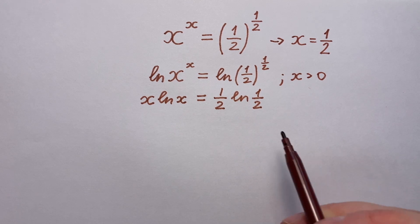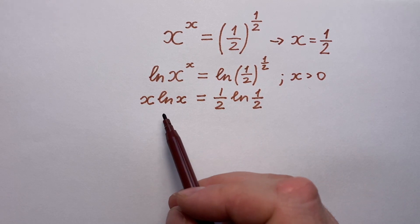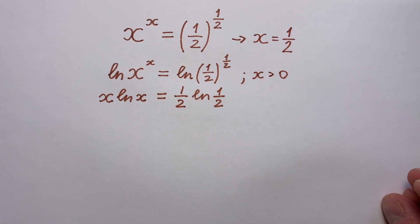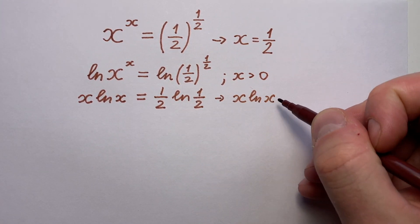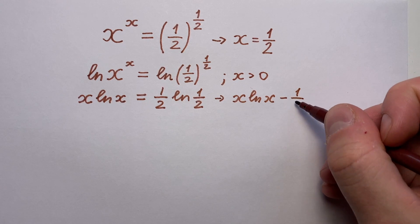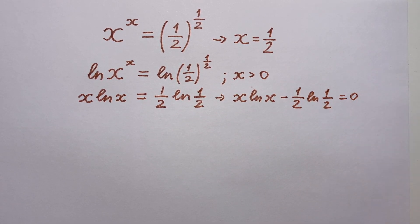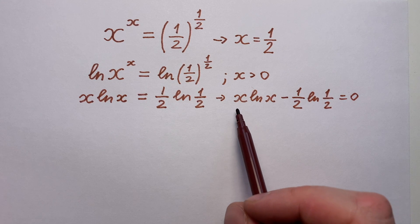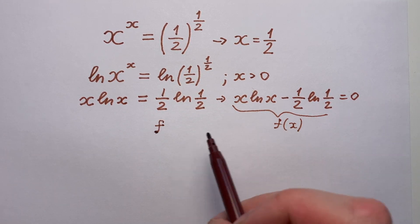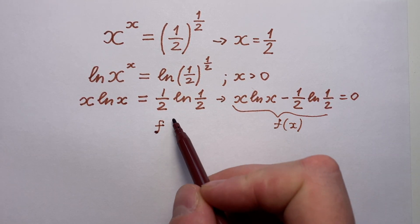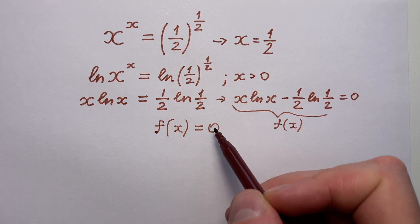Then let's take the right side of this equation to the left side. We can write x times natural logarithm x minus one half times natural logarithm of one half equals zero. Let's call the left side of this equation f(x). From this moment, we have to solve the equation f(x) equals zero.